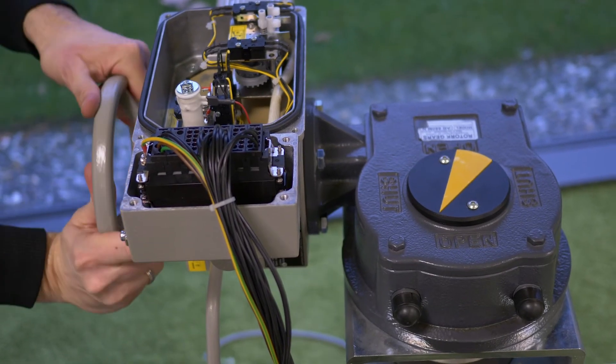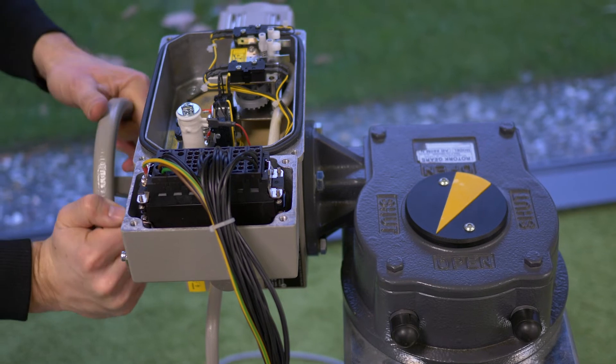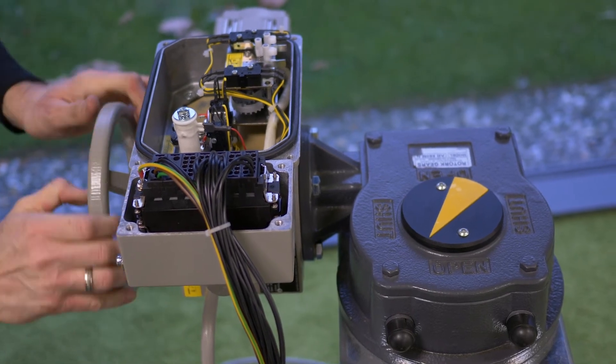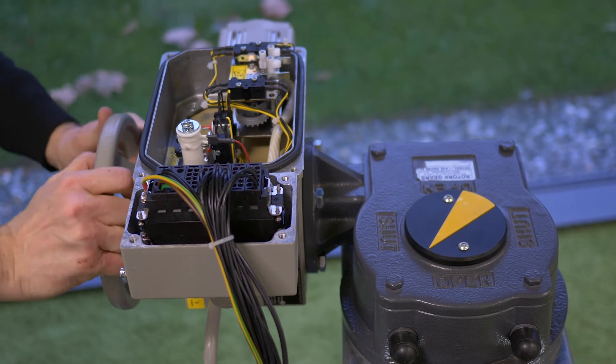Before operating the actuator electrically, move the valve into middle position to check the rotation of the motor.